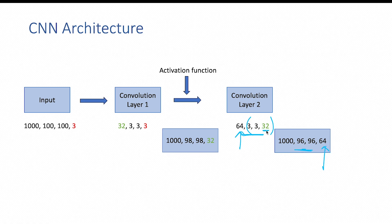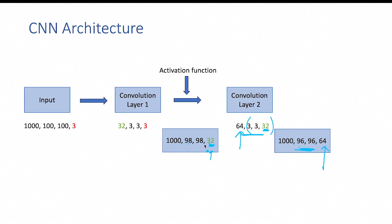The depth of the kernel must match the depth of the input — that is, the number of channels in the input. Since the depth of the input data is 32, the depth of the kernel is also set to 32. We can recalculate the height and width of the feature maps: 98 - 2 + 1 results in 96, and 98 - 2 + 1 again results in 96, giving feature maps of size 96 by 96 by 64.